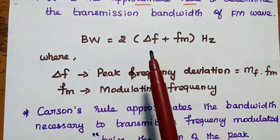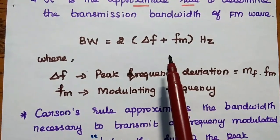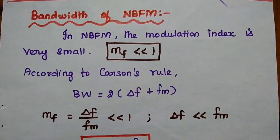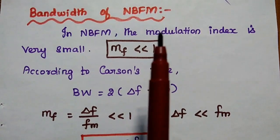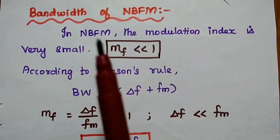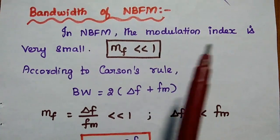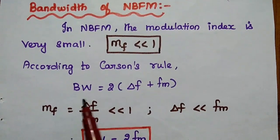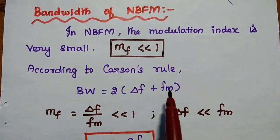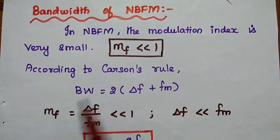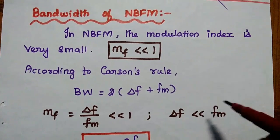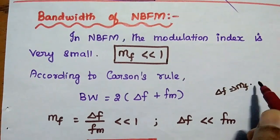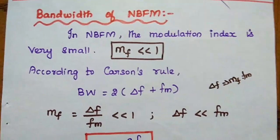We are going to use Carson's Rule to find out the bandwidth of narrow band frequency modulation and wide band frequency modulation. For narrow band frequency modulation, the modulation index is very small, that is much less than 1. According to Carson's Rule, bandwidth is equal to twice the sum of frequency deviation and modulating frequency. We know that Δf is equal to the modulation index multiplied by the modulating frequency.